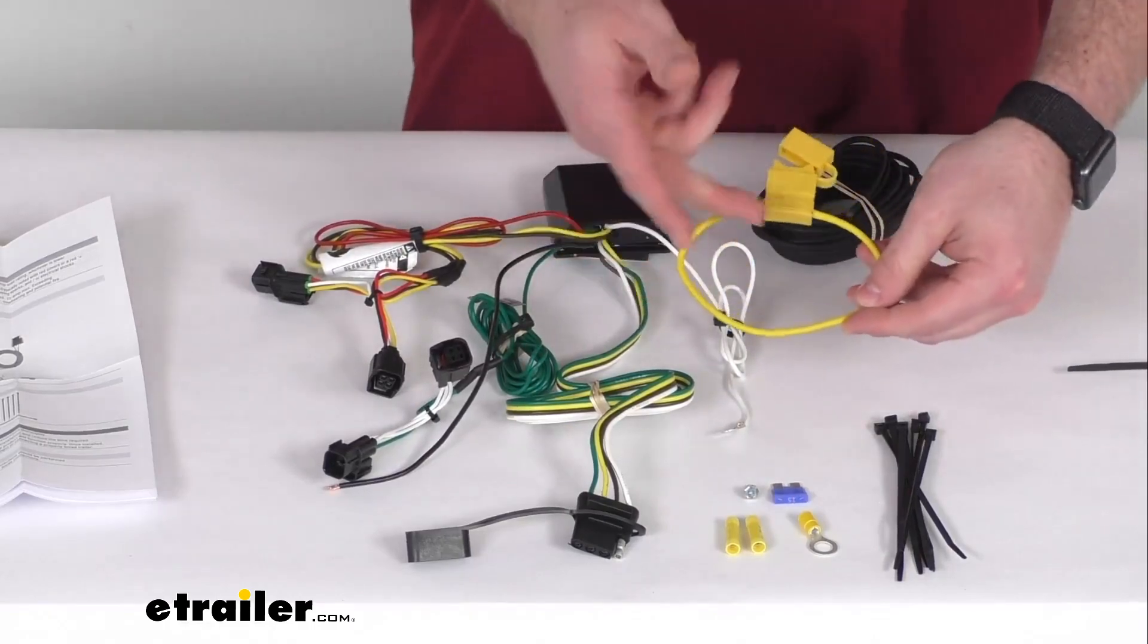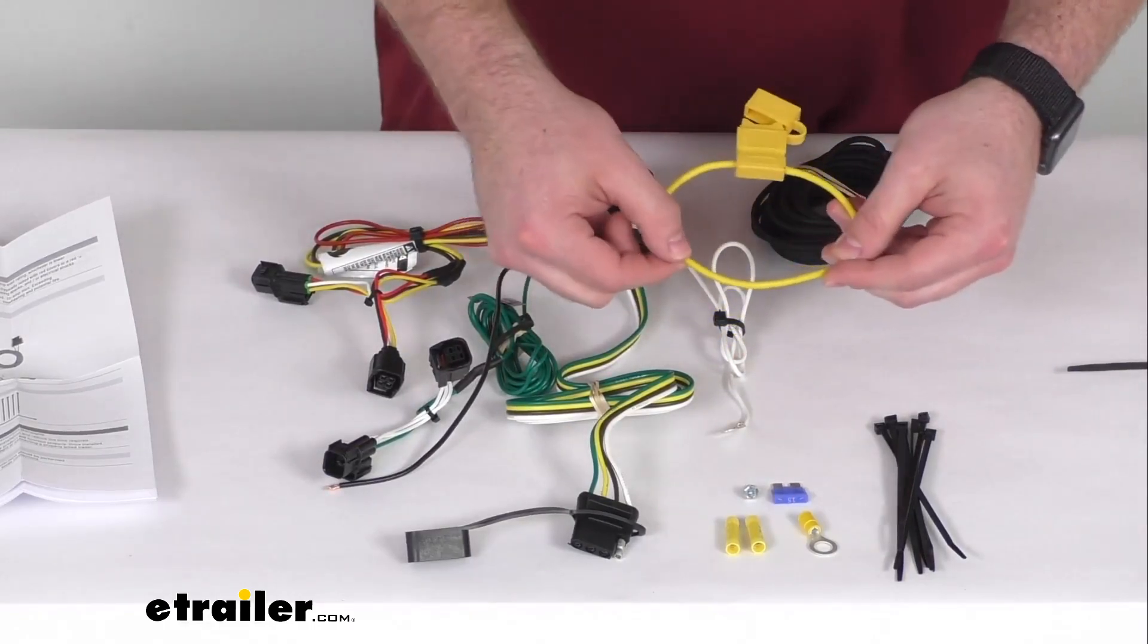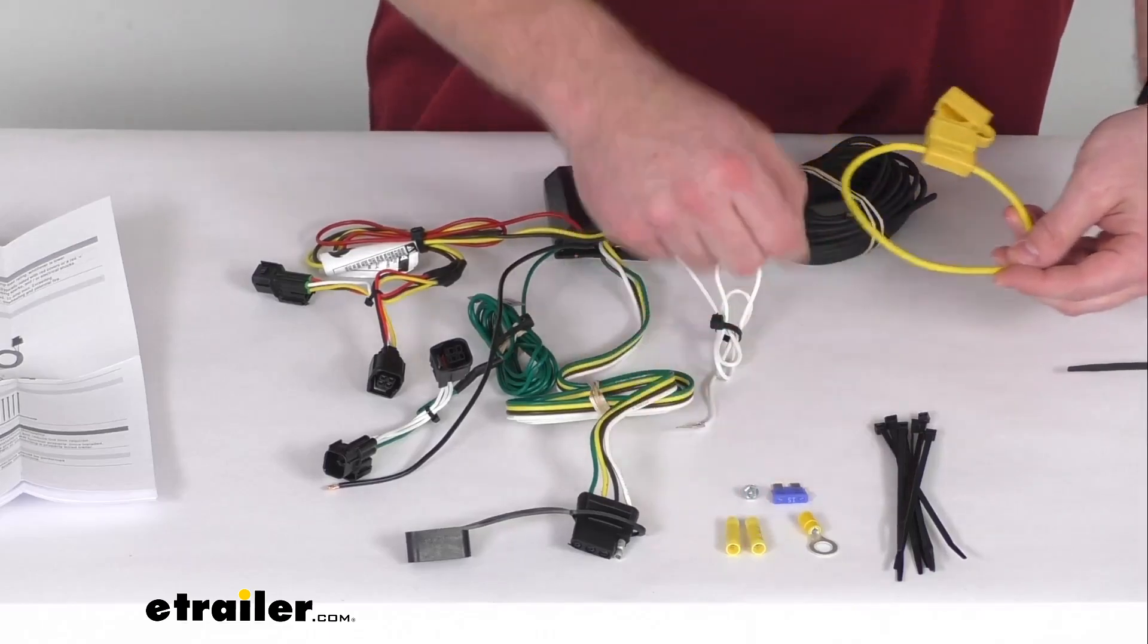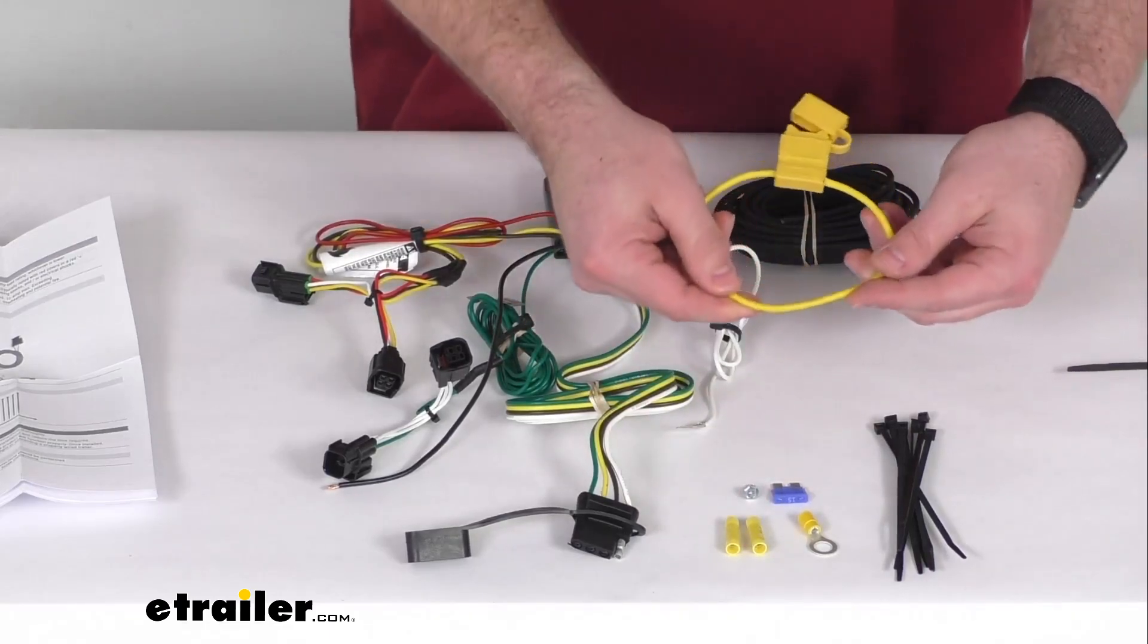They also have a fuse holder so you'll snip that, have one end that will use a butt connector to connect to the other end of your wire up by your battery.